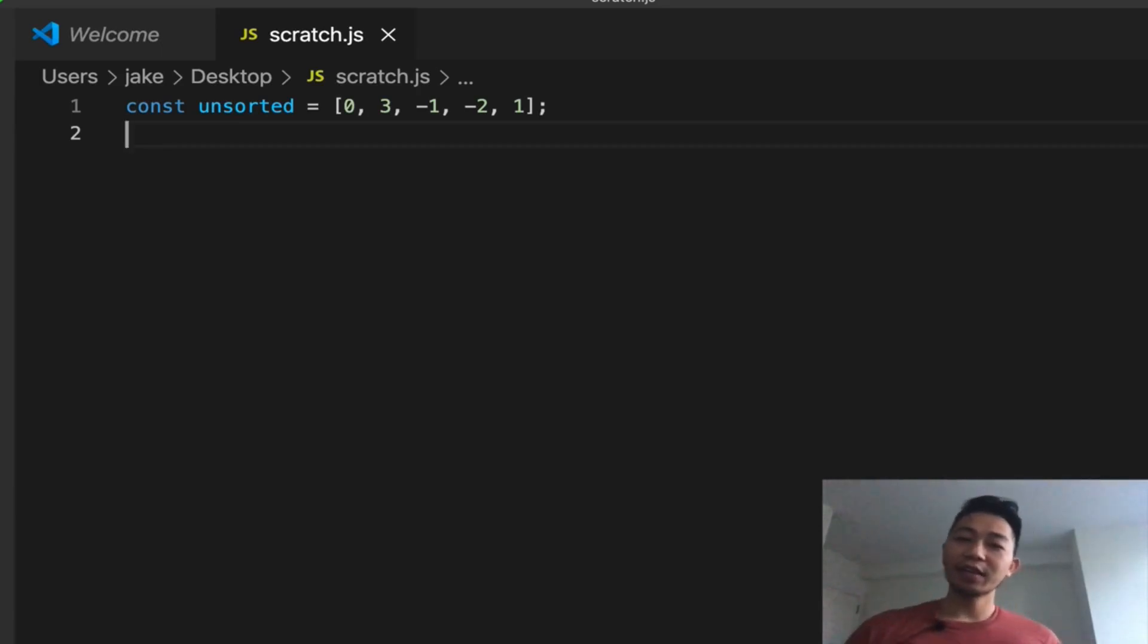Hey, what's up everyone? It's Jake. Once again, we're going to cover another problem today, and this one is called least missing positive number. Suppose we're given an array like the following on the screen. So we have const unsorted equals zero, three, negative one, negative two, and one.